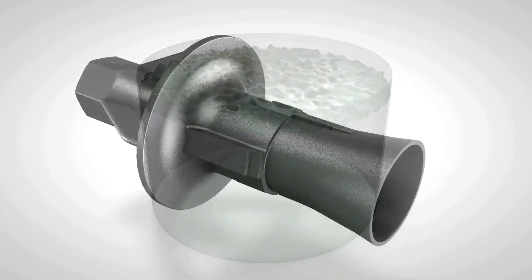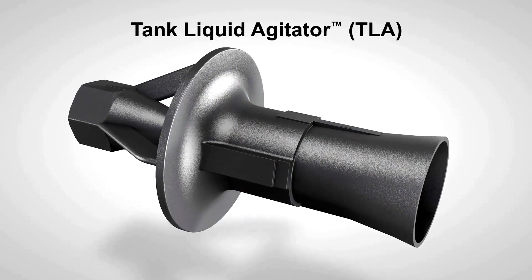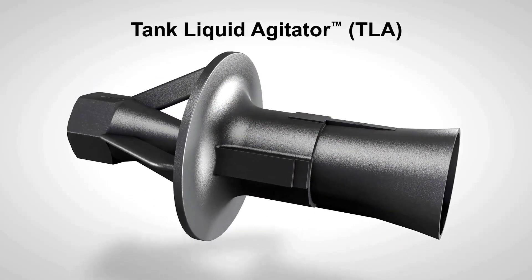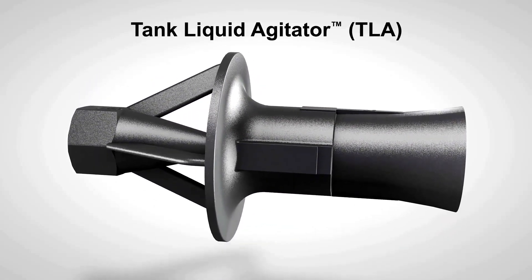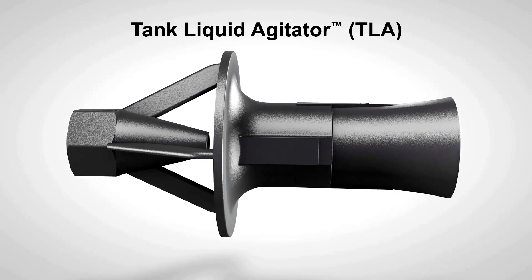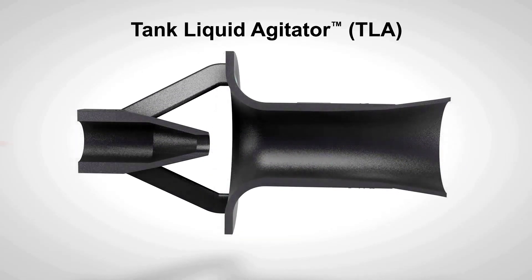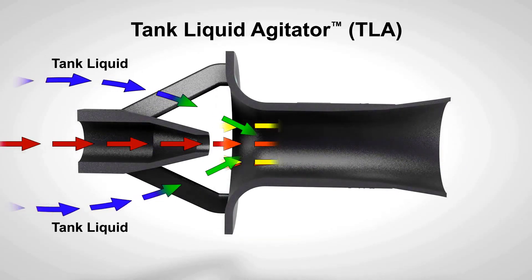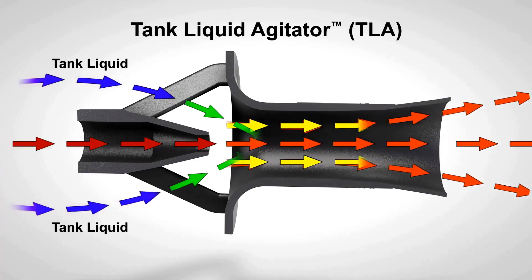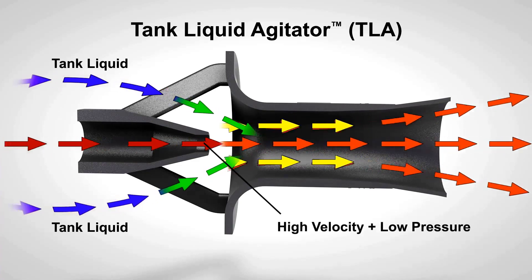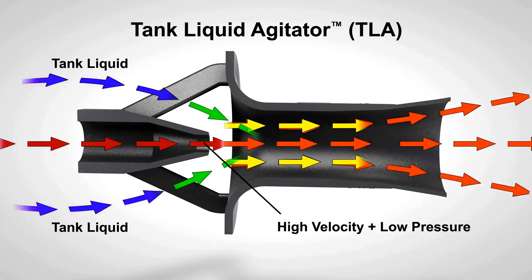How do we prove this? Our engineers will apply our tank liquid agitators, or TLAs, based on your process specifications. A TLA uses pumped liquid to create a high-velocity, low-pressure stream that will draw in the tank liquid and direct the combined fluids to achieve your goal of mixing.